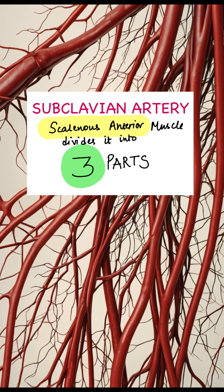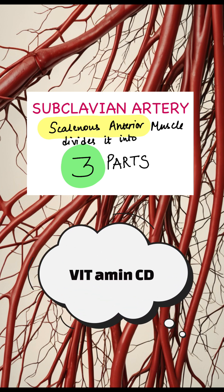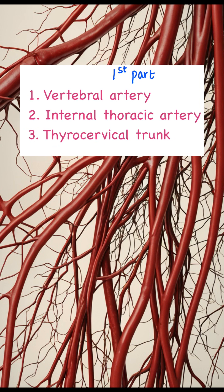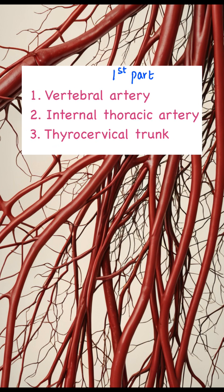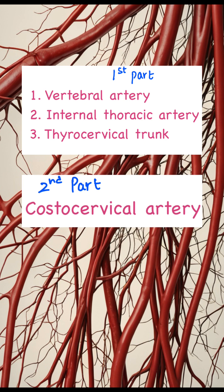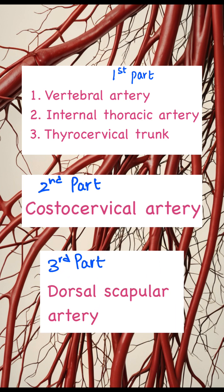Coming to the subclavian artery, the scalenus anterior muscle divides it into three parts, which can be remembered by the mnemonic vitamin C-D. The first part gives off the vertebral artery, internal thoracic artery, and the thyrocervical trunk. The second part gives off the costocervical artery, and the third part gives off the dorsal scapular artery.